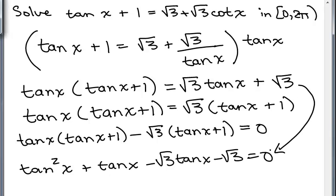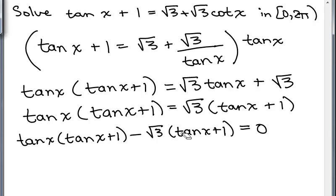So if you'd done this first, then the next step would have been to group these first two factors together. And there you go, this tan x times tan x plus 1. And then factor out the minus √3 and you'd have the other tan x plus 1. So different ways you might have gotten to this spot right here.